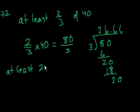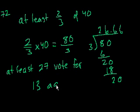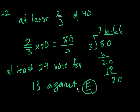At least 27 need to vote for. So if 27 are going to vote for, how many are going to vote against? Well, that means 40 minus 27. That means 13 against, which is E. That is the greatest number. Because if a larger number voted against it, you would have less people voting for it.